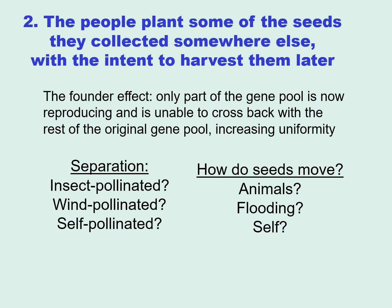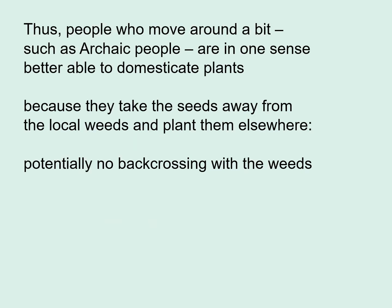How the plants are normally pollinated — whether self-pollinated, wind pollinated, or insect pollinated — could play a role in whether what you've taken away could cross back with the weedy population from which you originally collected. How seeds move could also affect that. People who move around a bit, such as Archaic people, are in one sense better able to domesticate plants, because they take the seeds away from the local weeds and plant them elsewhere, potentially allowing no back-crossing with the original weedy population.